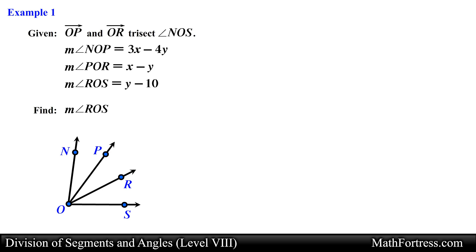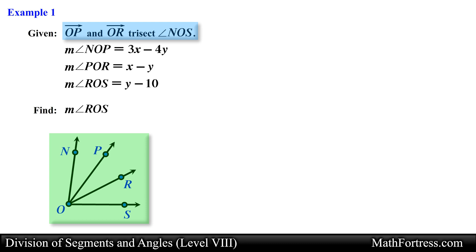Given that ray OP and ray OR trisect angle NOS, the measurement of angle NOP equals 3x minus 4y, the measurement of angle POR equals x minus y, and the measurement of angle ROS equals y minus 10 — find the measurement of angle ROS. In this problem we are provided with a diagram along with a geometric relation and algebraic expressions for the measurement of three angles in terms of x and y. We are asked to find the measurement of a particular angle.